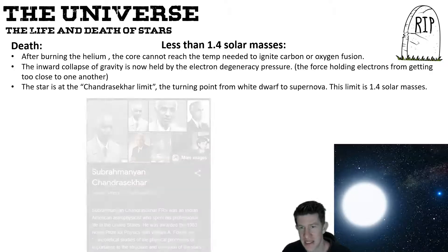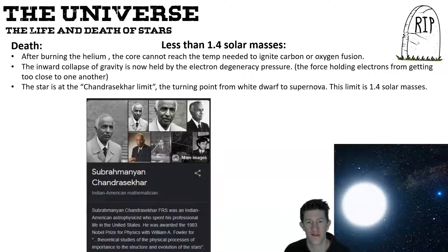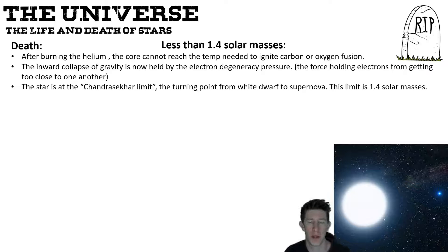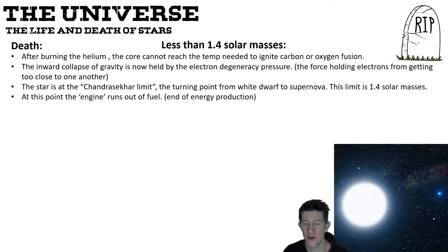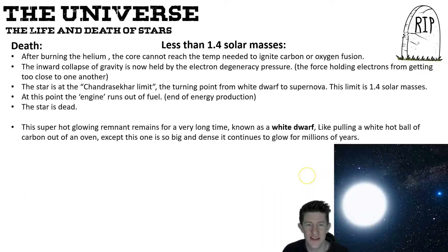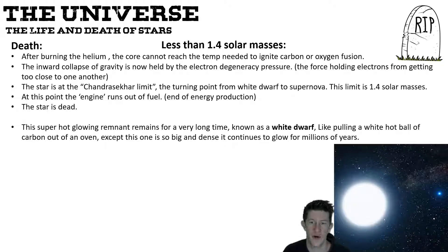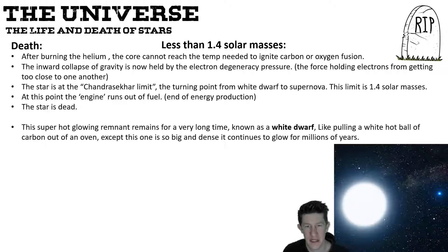This limit is sometimes called the Chandrasekhar limit — named after a famous scientist — and is the turning point between a white dwarf and a supernova. At 1.4 solar masses the electron pressure can withstand gravity and reach equilibrium, so the engine runs out of fuel and the star is dead. It's still very very hot, already compressed, and glowing white-hot, but just slowly cooling down over millions of years — like a very hot piece of metal taken from a fireplace that still glows for quite a while, but magnified by millions.